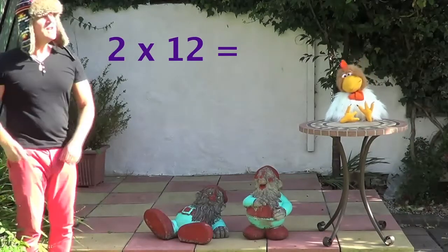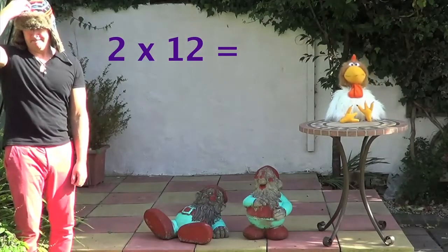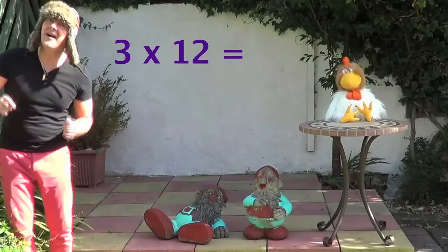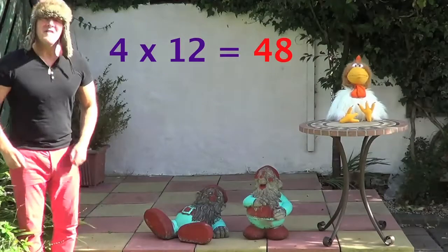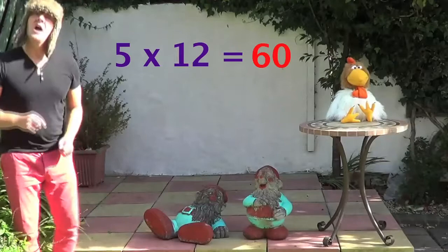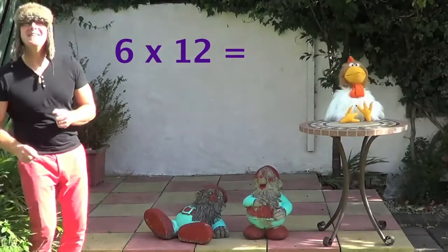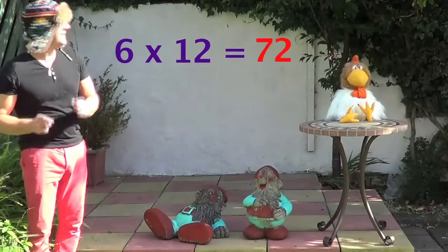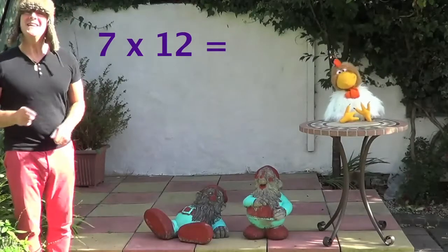2 times 12 is 24, 3 times 12 is 36, 4 times 12 is 48, 5 times 12 is 60, 6 times 12 is 72, 7 times 12 is